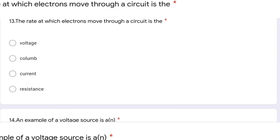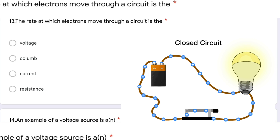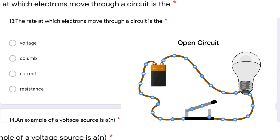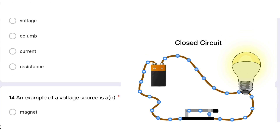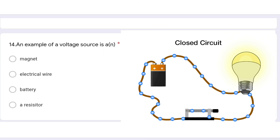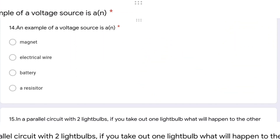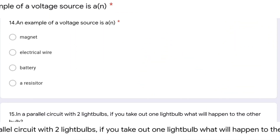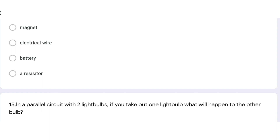The rate at which electrons move through a circuit is called current — current is the rate of flow of electrons in a given time. An example of a voltage source is a battery. A battery provides voltage in any electrical circuit.